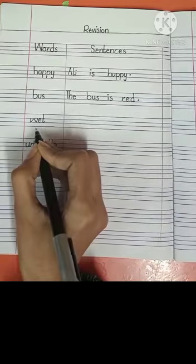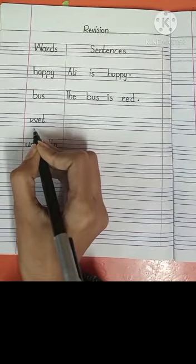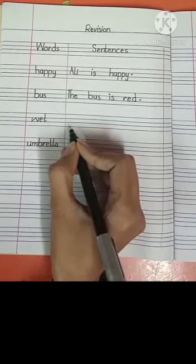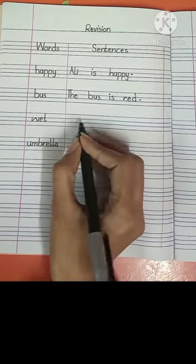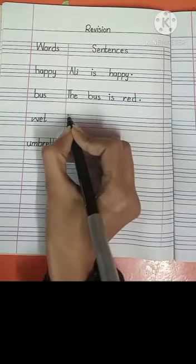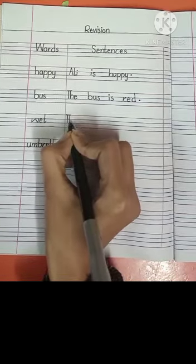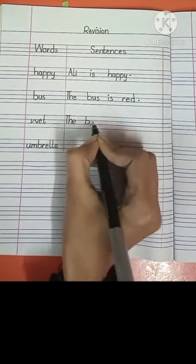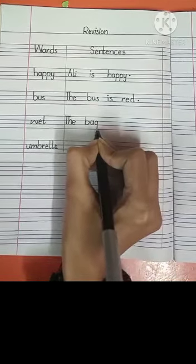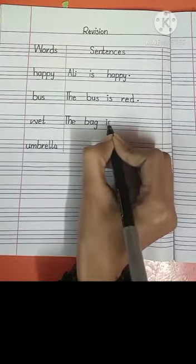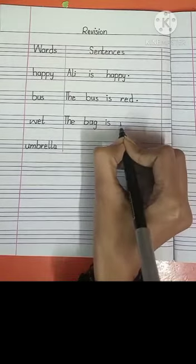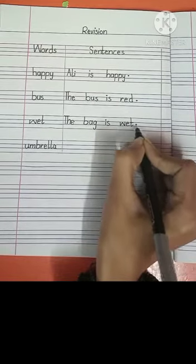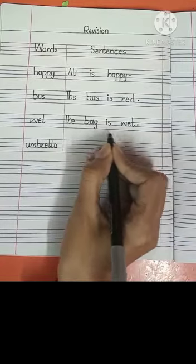Look at the next one. The next word is wet. Students, you can write here: it is wet, the bag is wet. I will write here: the bag is wet. Write with me. T-H-E, the bag. B-A-G, bag is. Is, wet. W-E-T, wet. Put a full stop here. The bag is wet.